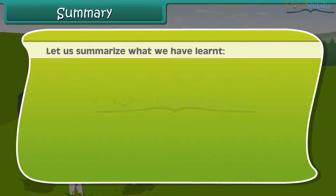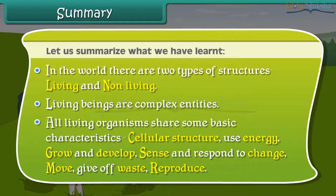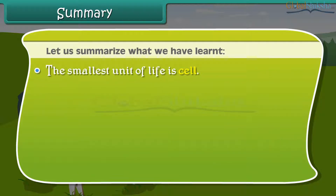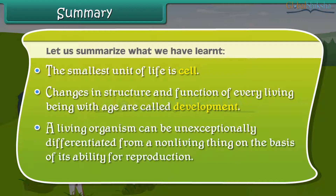Let us summarize what we have learned. In the world there are two types of structures: living and non-living. Living beings are complex entities. All living organisms share some basic characteristics: cellular structure, use energy, grow and develop, sense and respond to change, move, give off waste, and reproduce. The smallest unit of life is the cell. Changes in structure and function of every living being with age are called development. A living organism can be unequivocally differentiated from a non-living thing on the basis of its ability for reproduction.